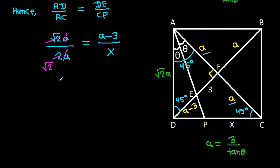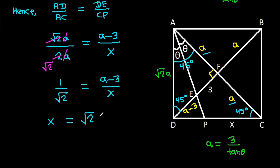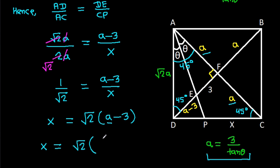Cross-multiplying gives X = root 2 times (A minus 3). Since A = 3 over tan theta, we have X = root 2 times (3 over tan theta minus 3).